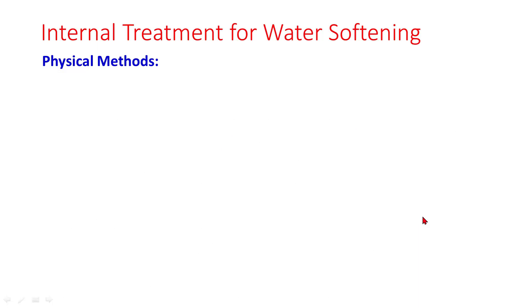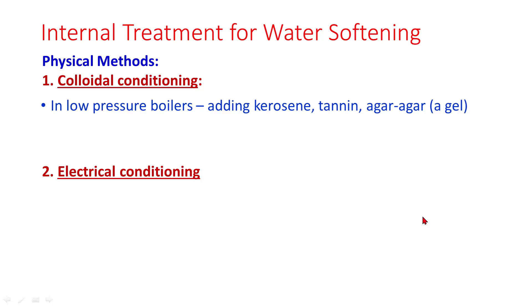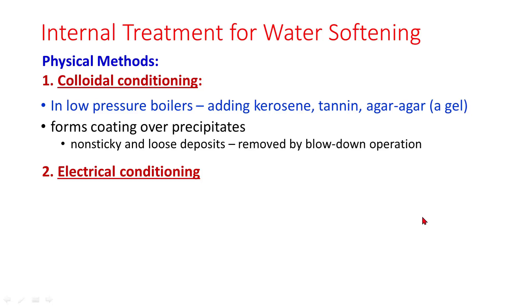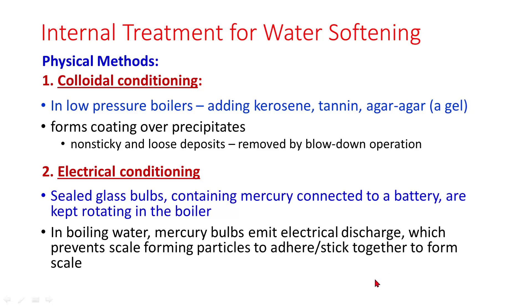Physical methods include colloidal conditioning and electrical conditioning. In colloidal conditioning for low pressure boilers, kerosene, tannin, or agar agar is added. These substances form a coating over the precipitates, resulting in non-sticky and loose deposits that can be removed by blowdown operation. In electrical conditioning, sealed glass bulbs containing mercury connected to a battery are kept rotating in the boiler. The mercury bulbs emit an electrical discharge, which prevents scale-forming particles from adhering together to form scale.